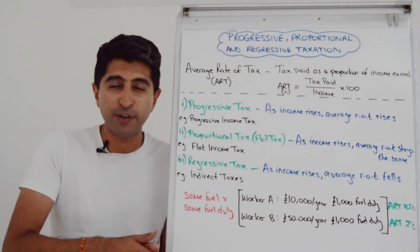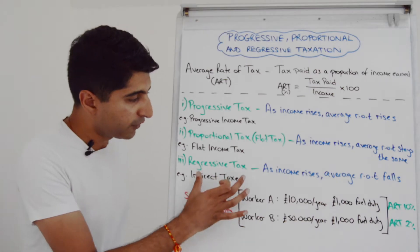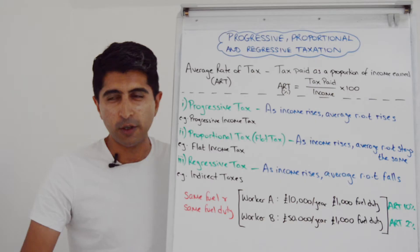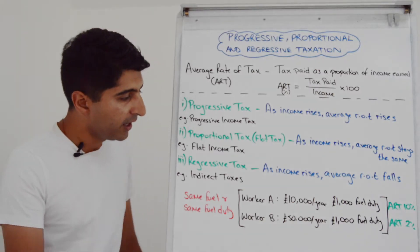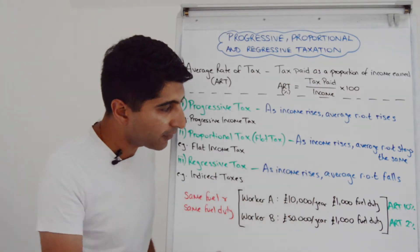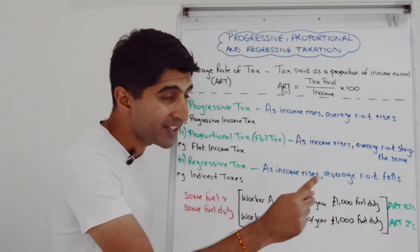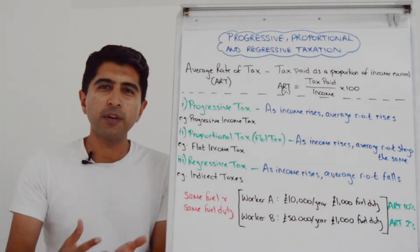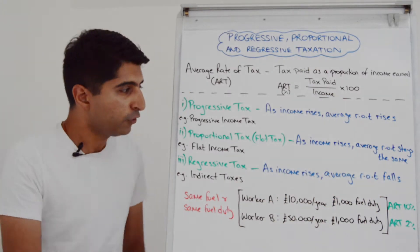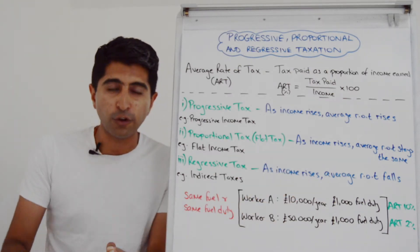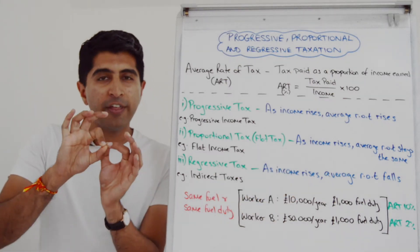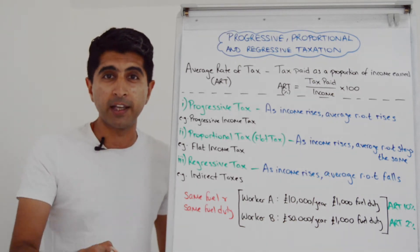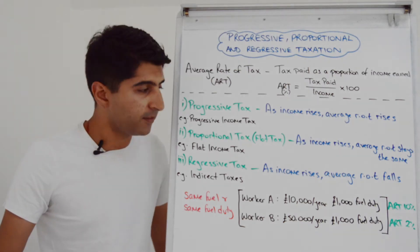Whereas a regressive tax — for example, any indirect taxes are regressive, whether it's fuel duty, cigarette duty, alcohol duty, VAT — they're all regressive. This is a tax where as income rises, the average rate of tax actually falls. So as people get richer, the amount of tax they pay as a proportion of their income actually goes down. This is a tax that burdens those on lower incomes more than those on higher incomes, because those on higher incomes are paying less tax as a proportion of their income compared to lower income households.